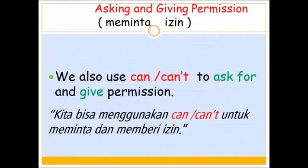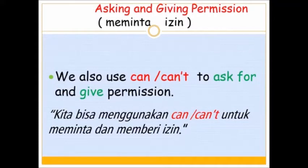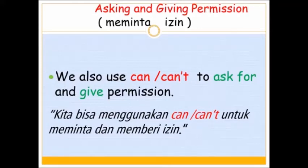Kalau tadi kita sudah belajar asking, expressing ability and willingness, ternyata can dan will itu juga bisa untuk expressing atau asking permission — meminta izin. Kita bisa menggunakan kata can atau can't untuk meminta atau memberi izin. Jadi nggak cuma untuk menyatakan kemampuan atau kemauan, tapi bisa juga untuk meminta atau memberikan izin.